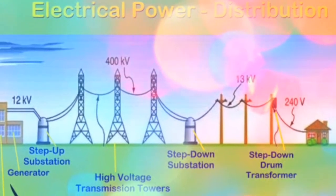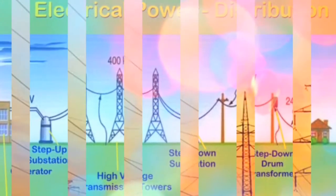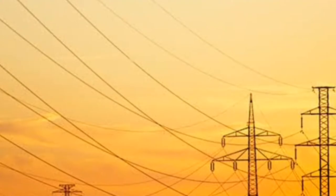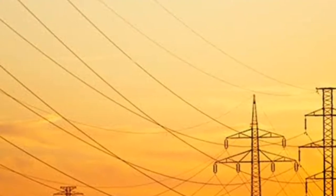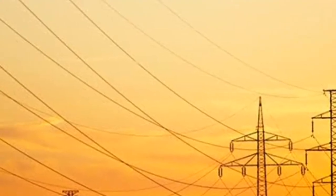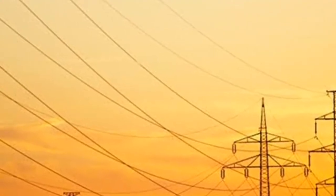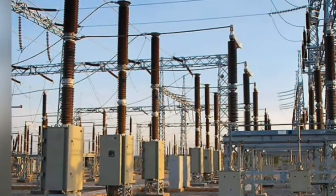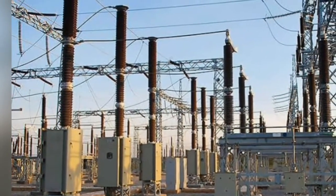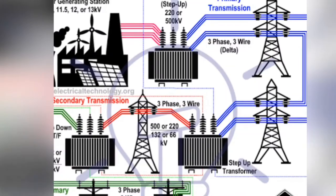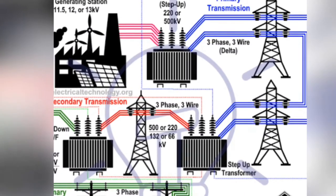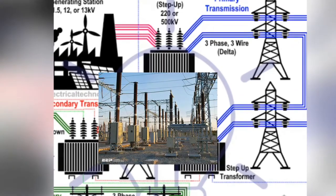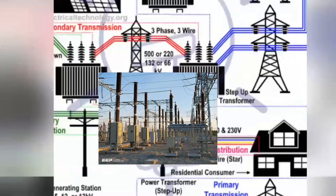Again, the voltage is stepped down using substations. For industrial purpose and domestic purpose, the voltage is stepped down into 33kV. Again, 11kV is stepped down into 440V or 220V supply. To do all this, a substation is required.